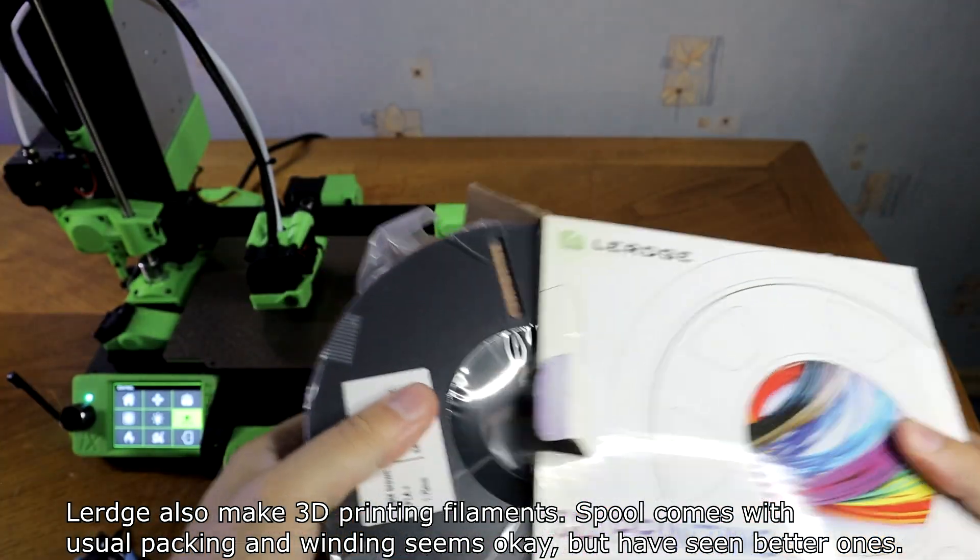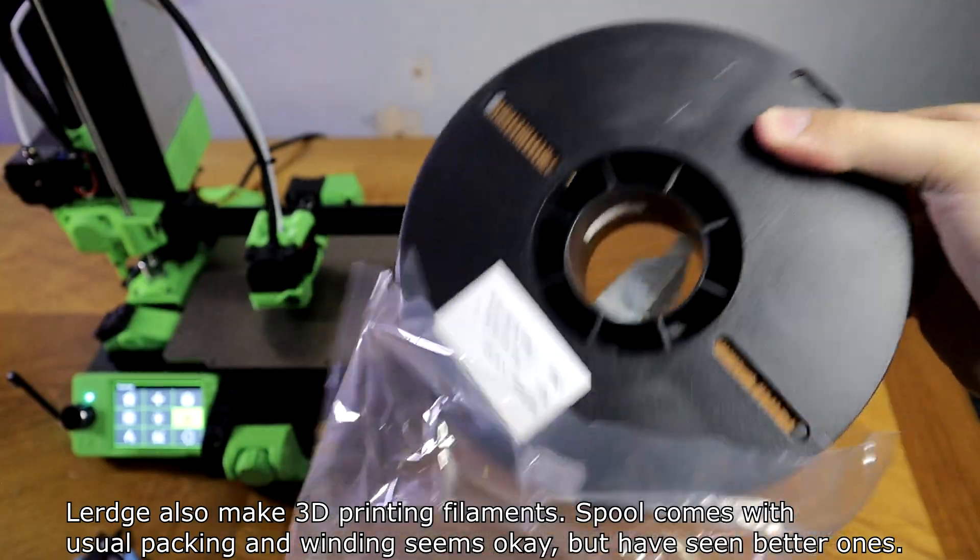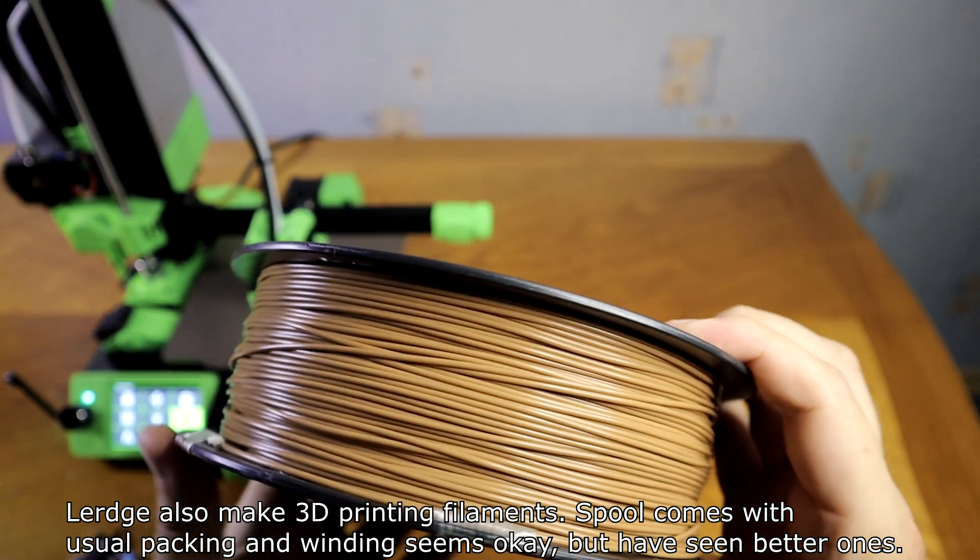Lurch also makes 3D printing filaments. The spool comes with usual packing and winding seems okay, but I have seen better ones.